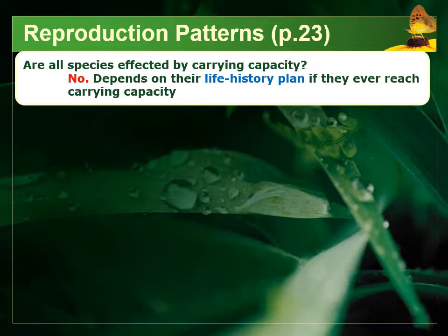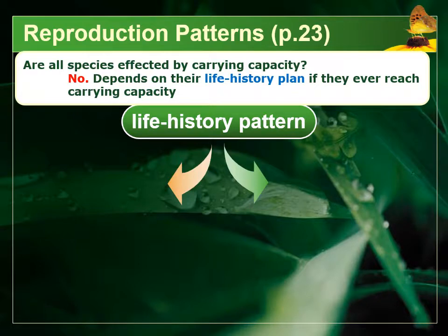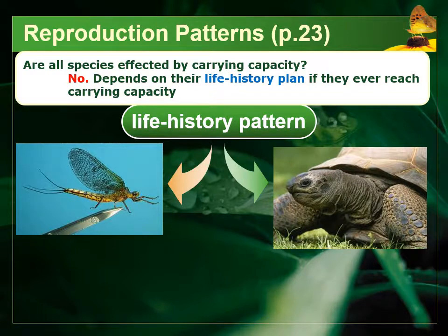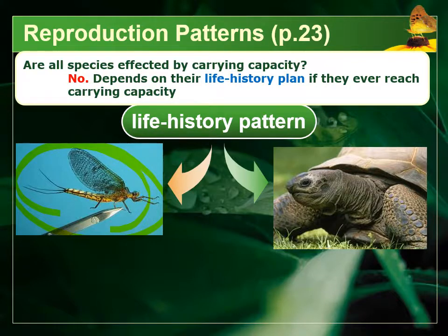Not every species is capable of hitting their carrying capacity — it really depends on their life history plan. We have two extremes. A rapid life history, like the mayfly, which is an insect that lives only one day: it is born, hits sexual maturity within a day, reproduces, and then dies shortly after. It has a very, very short lifespan of a single day.